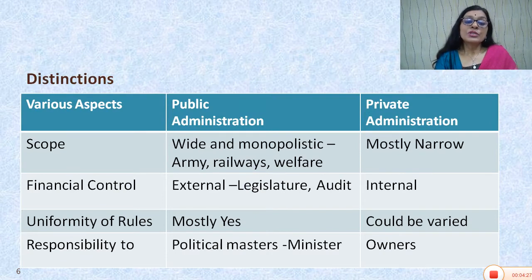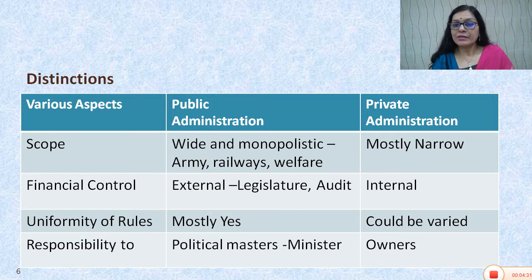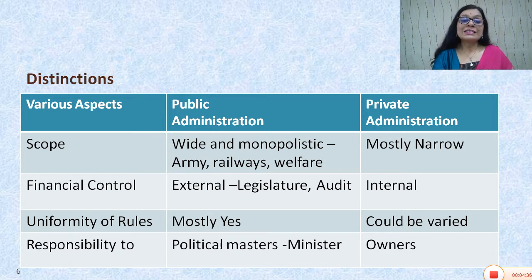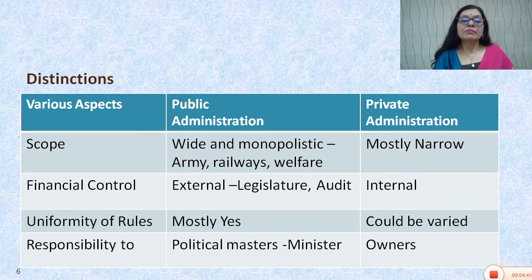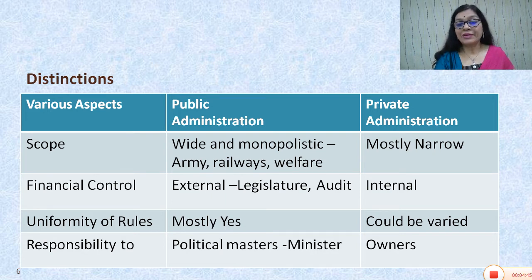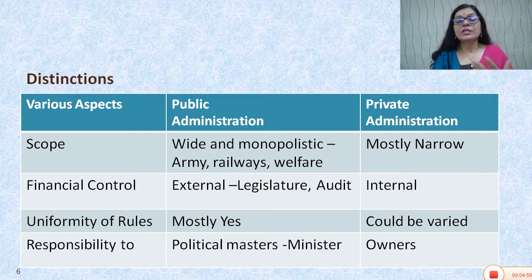Coming to the scope of public administration and private administration, we find a major difference. The scope of public administration is wide and very often monopolistic. For example, army, railways, and a number of welfare activities. Whereas in private administration, the scope is mostly narrow.